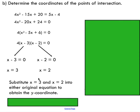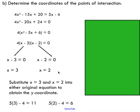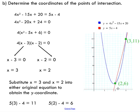To get the y-coordinates, I substitute my two x-values into either original equation. I'll pick the line because it's much easier than squaring. Substituting x = 3 gives y = 11, and substituting x = 2 gives y = 6. If you graph the quadratic and the linear relation, you can confirm that those are indeed the points of intersection.